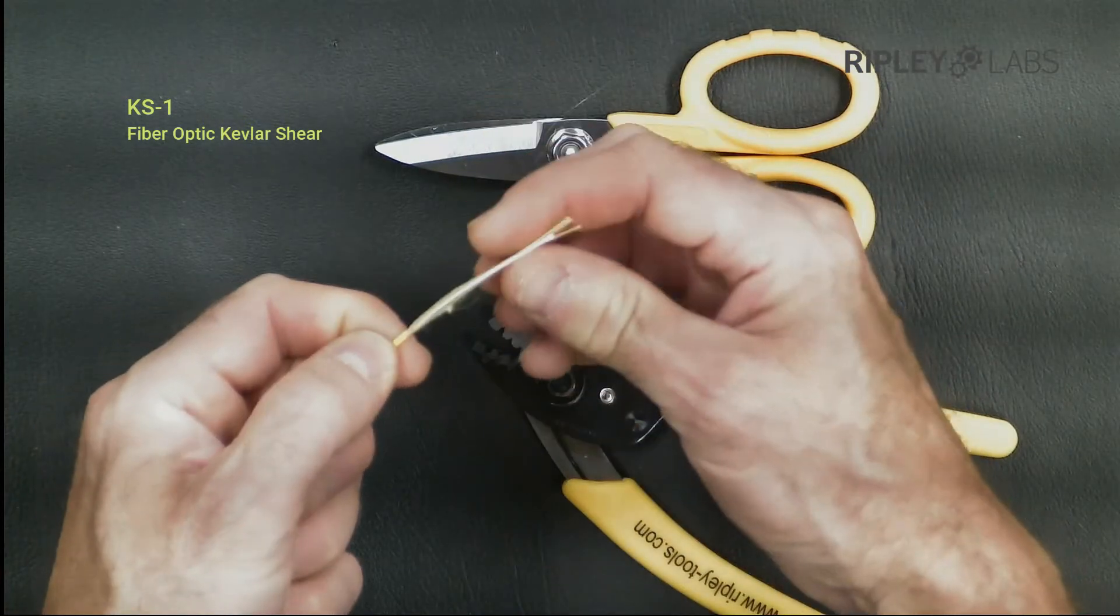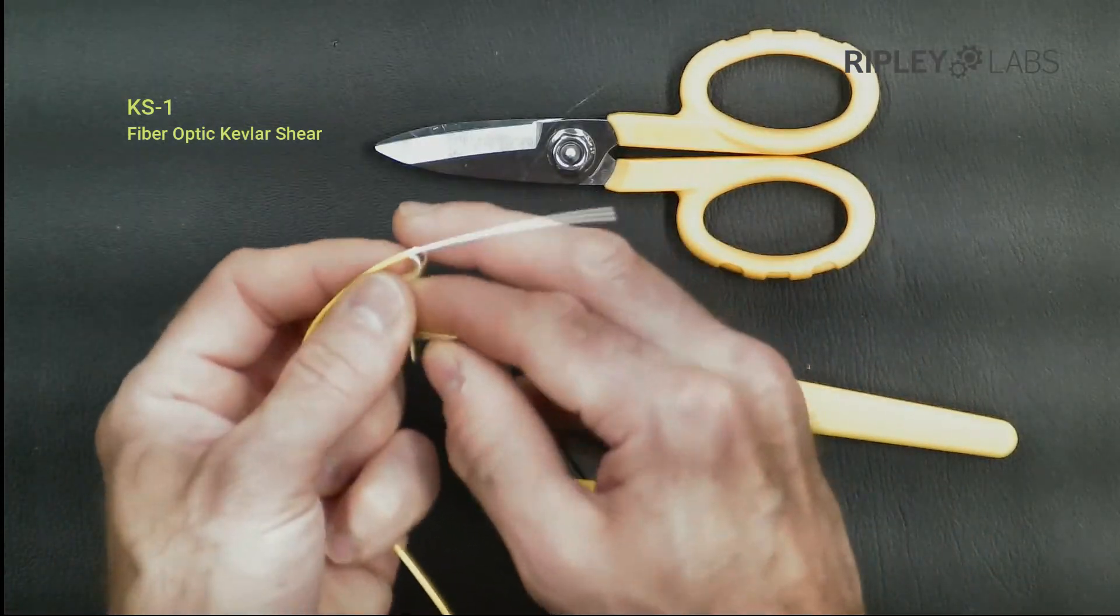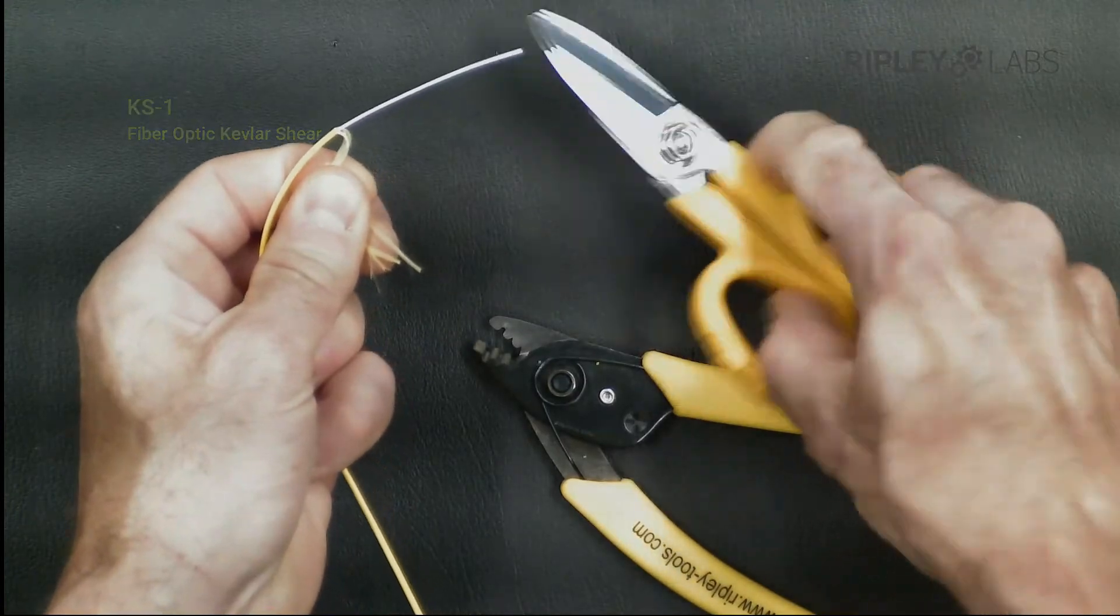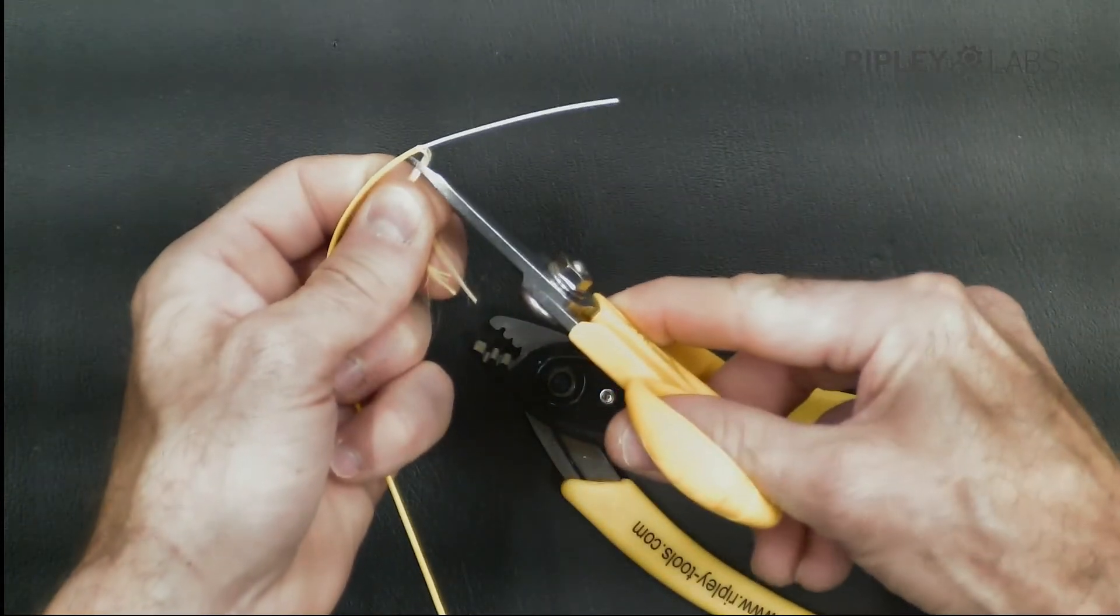Ripley offers many different Kevlar shears depending on your need and specific end use. Today we're using the Miller KS-1 to cleanly cut the exposed Kevlar down to the jacket.